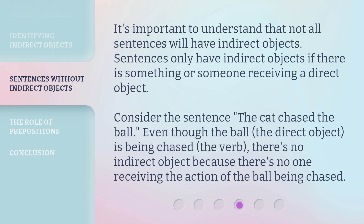It's important to understand that not all sentences will have indirect objects. Sentences only have indirect objects if there is something or someone receiving a direct object. Consider the sentence 'the cat chased the ball.' Even though 'the ball' is the direct object being chased, there's no indirect object because there's no one receiving the action of the ball being chased.